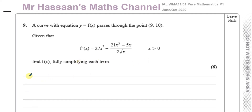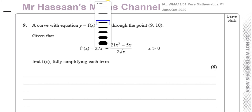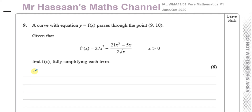If I want to find what f(x) is, I integrate f'(x) with respect to x. That's going to give me the original function because it's like doing the reverse of differentiation — it undoes the differentiation. So if I take my gradient function, which they've given us, and integrate it with respect to x, that's going to give me f(x).